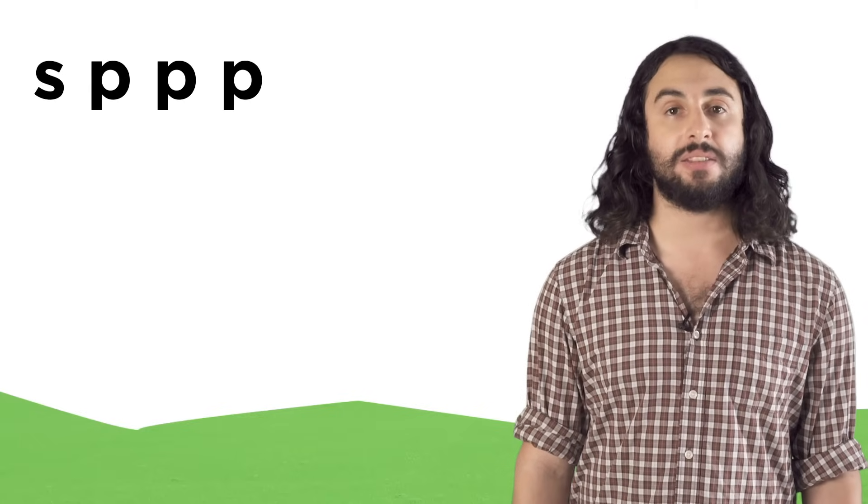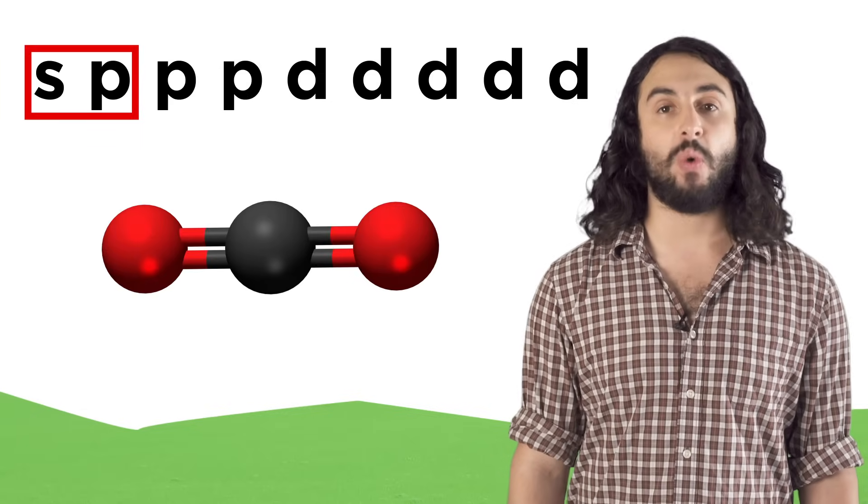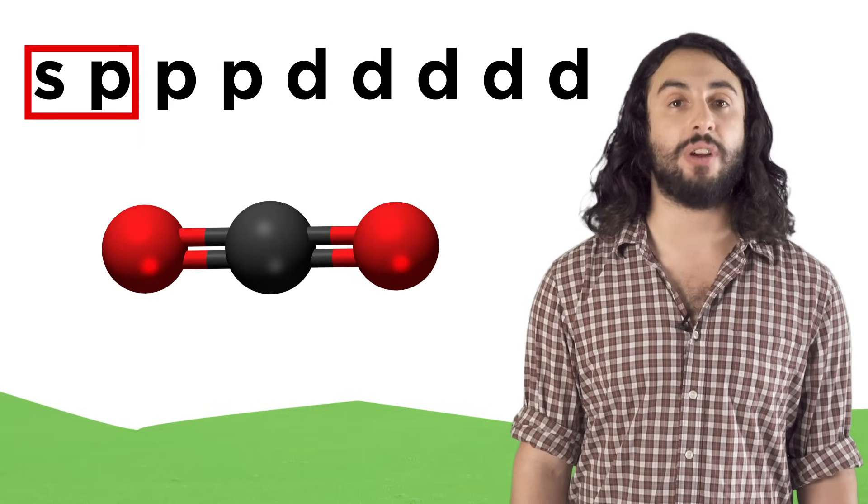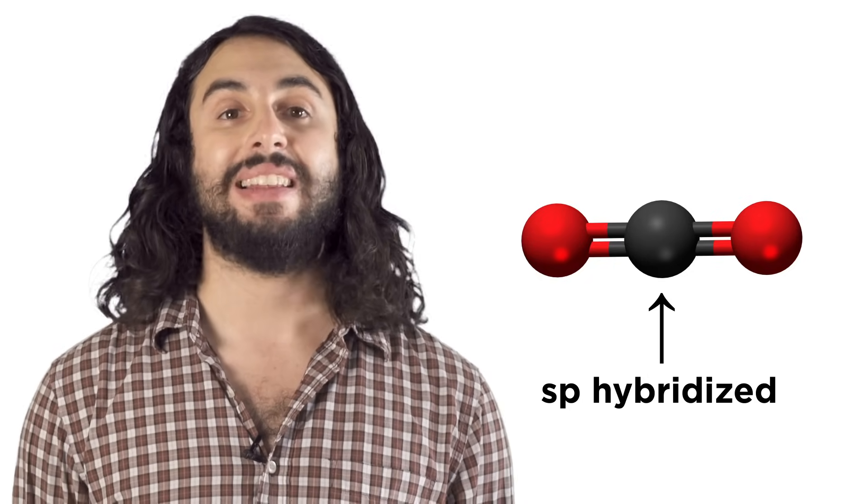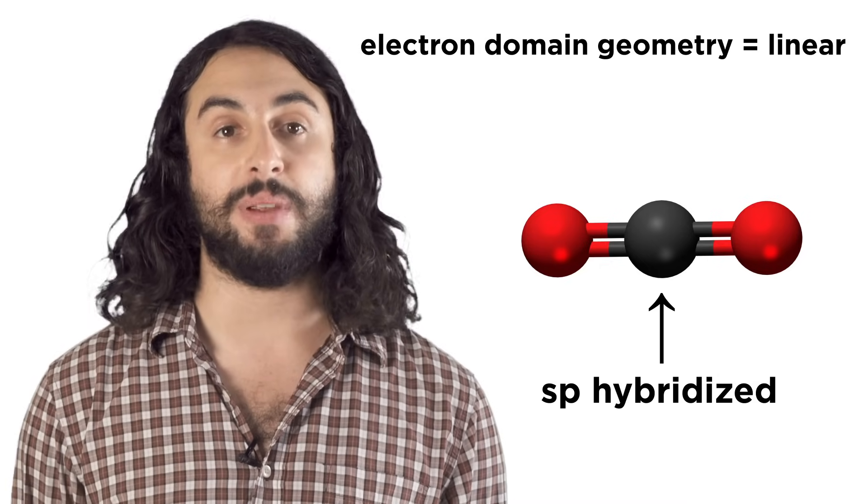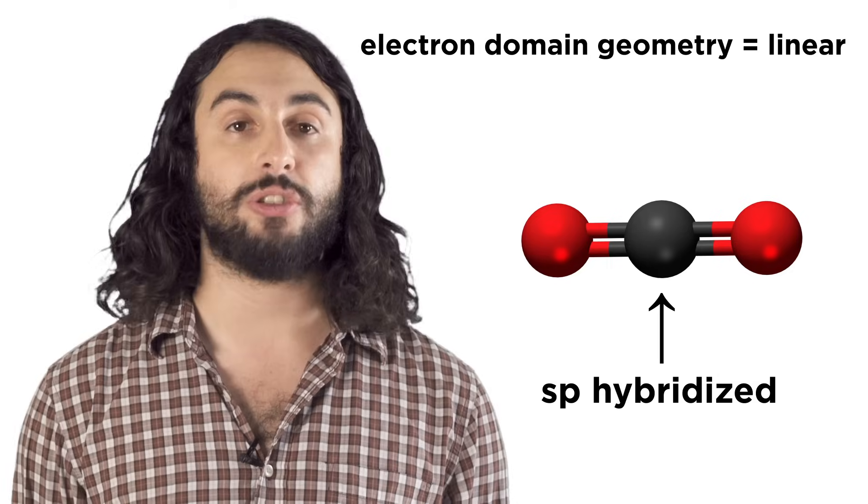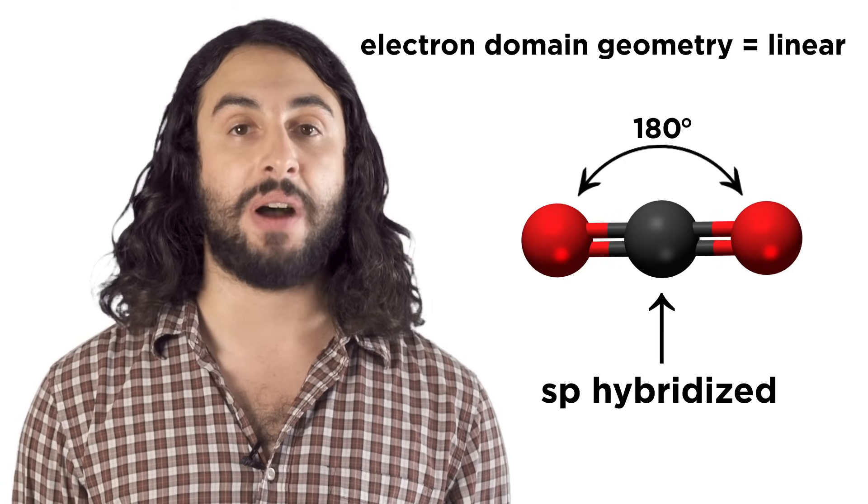For each energy level, there is one s, three p's, and five d's. So here we just need one s and one p for these two electron domains. Anything that is sp hybridized is going to show linear electron domain geometry, because the furthest these two oxygen atoms can be from each other while still being bound to carbon is this shape, which involves a 180 degree bond angle.